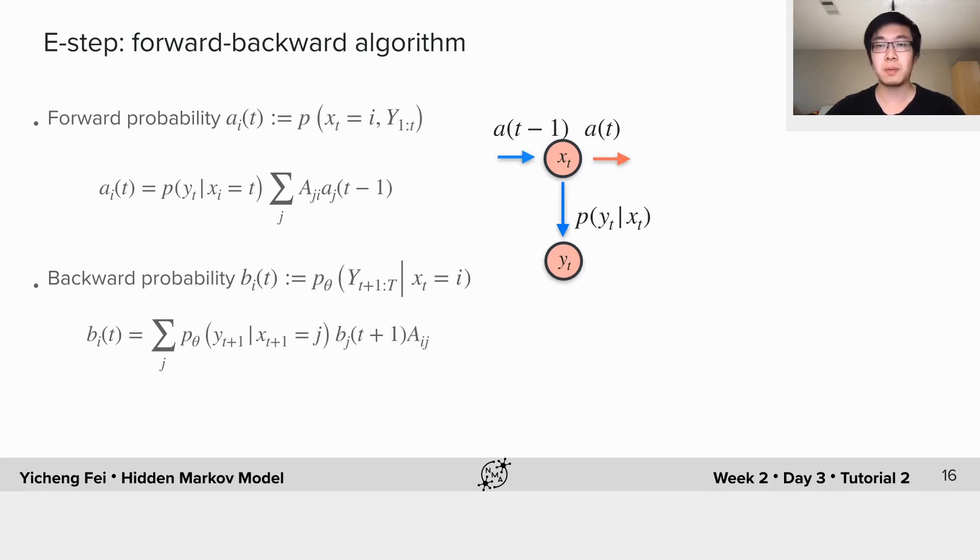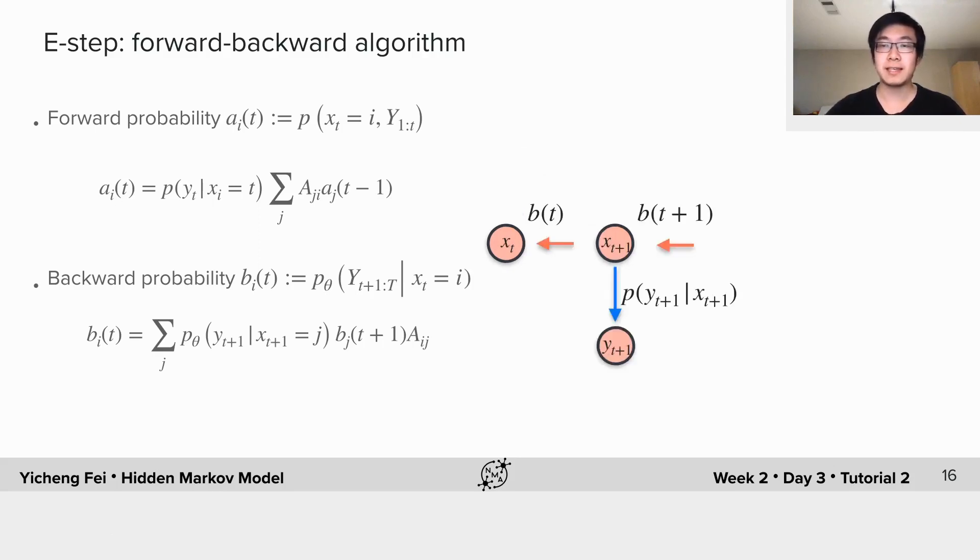The backward probability β_i(t) is defined as the likelihood of seeing all future data given the current state. And we have a similar recursion of β_i from the end of the chain to the beginning.